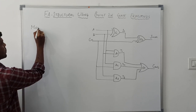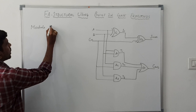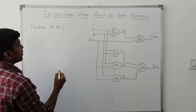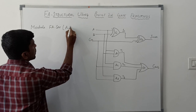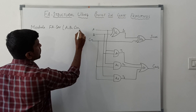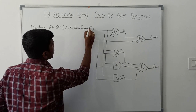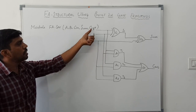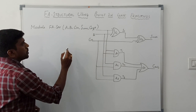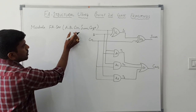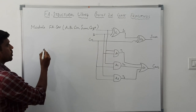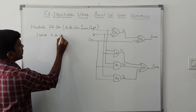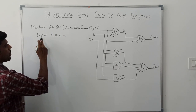Now we go to write the program. As usual, first you write the module keyword, then the module name: full_adder_structure. Then you assign the input and output variables. In this structure the input variables are a, b, and c-in. Totally five variables are used: a, b, c-in, sum, and c-out. You assign input variables as: input a, b, c-in.